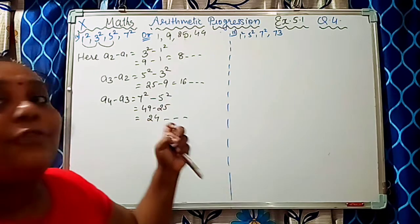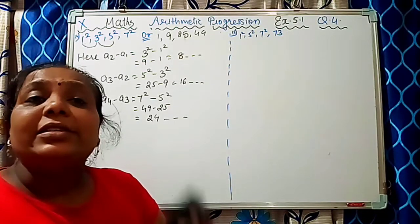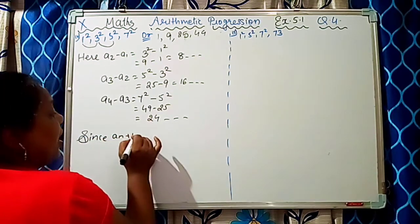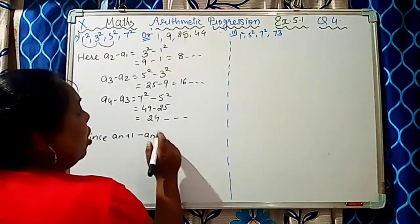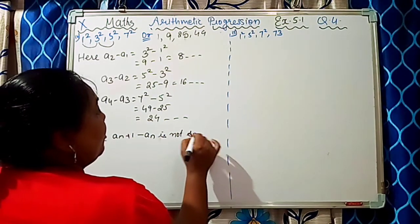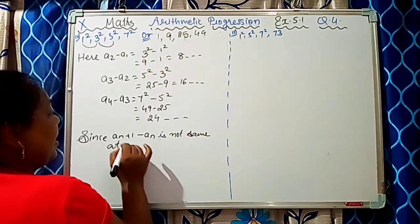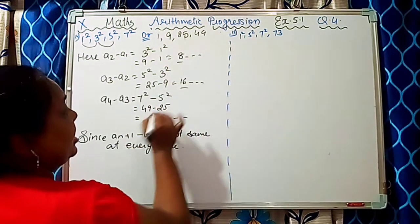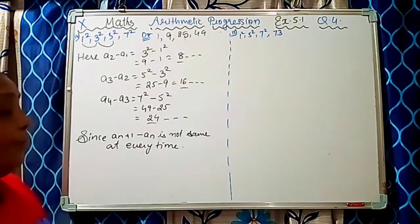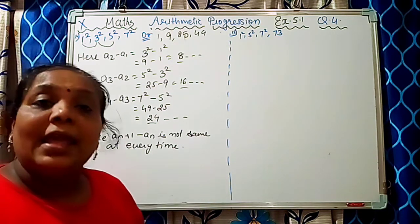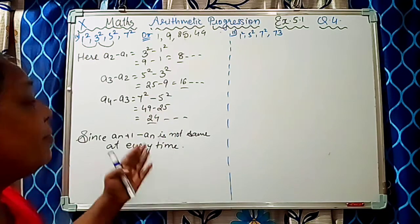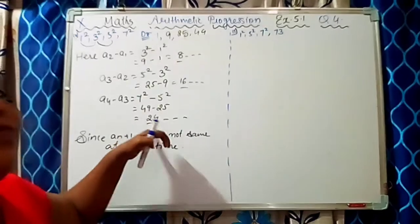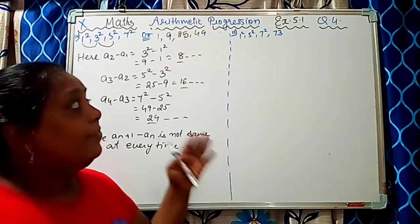So the differences are 8, 16, and 24. Since A(n+1) minus A(n) is not the same every time — we are getting 8, 16, and 24, which are not the same value — this does not form an AP.